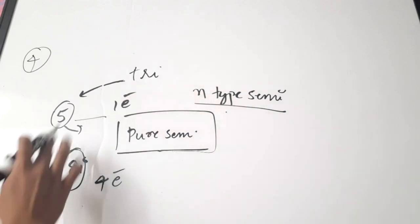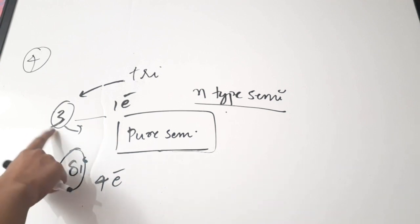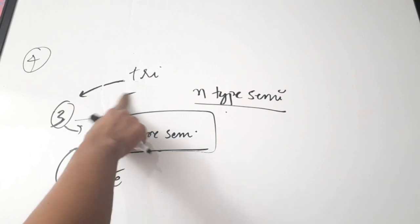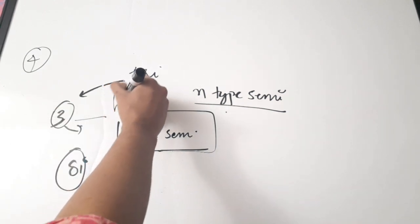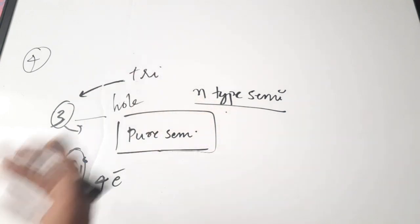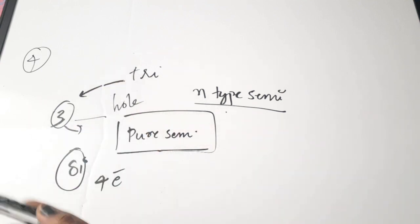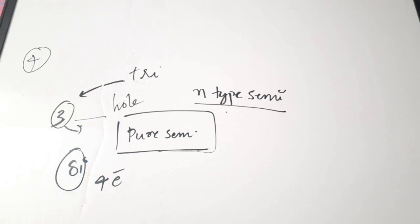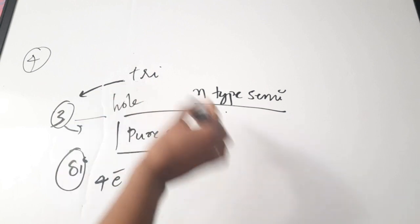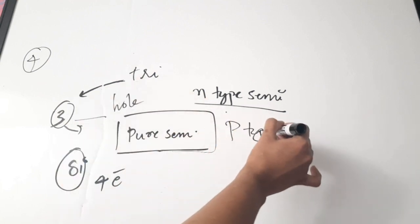Consider adding a trivalent impurity — trivalent means having only 3 electrons in the outer shell. There is a deficiency of an electron: we require 4, but we have only 3. This deficiency of an electron is called a hole. By adding more and more trivalent impurities, these deficiencies increase — the holes or positive charge increases — and hence we create a P-type semiconductor. The correct answer for the previous question is 4, N-type semiconductor.